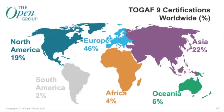The worldwide distribution of certifications breaks down as follows: Europe 46%, North America 19% — that's about 19,000 — Asia 22%, Oceania 6%, Africa 4%, and South America 2%.